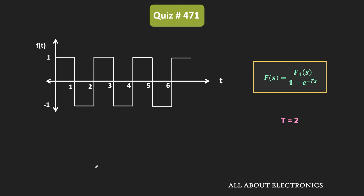Now that we have F1(s), we can easily find the Laplace transform of the periodic waveform. F(s) = F1(s) / (1 - e^(-Ts)). Substituting the values of F1(s) and T=2, we can write it as (1/s)(1 - e^(-s))² / (1 - e^(-2s)).